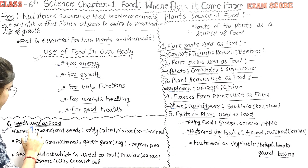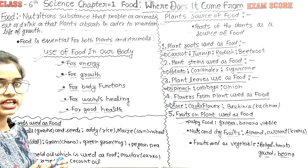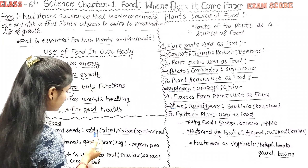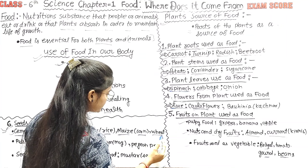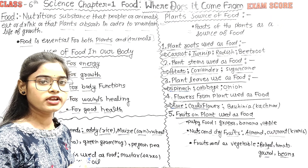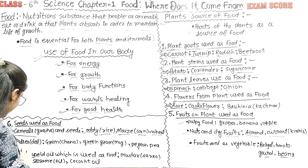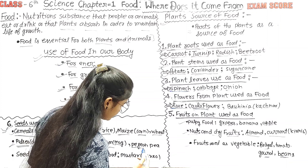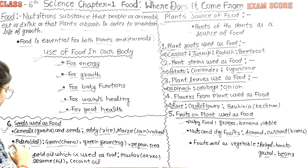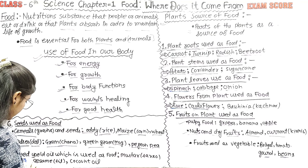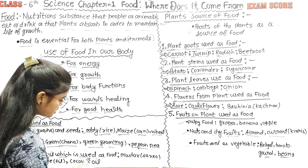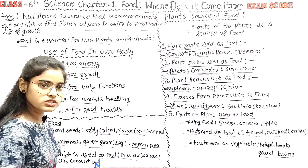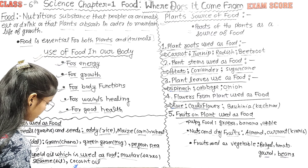Our sixth point is seeds used as food. The first is cereals, like rice, maize, and corn. The second is pulses, like gram, chana dal, green gram, moong dal, and peas. The third is seed oils — we extract oil from seeds like mustard seed and coconut.